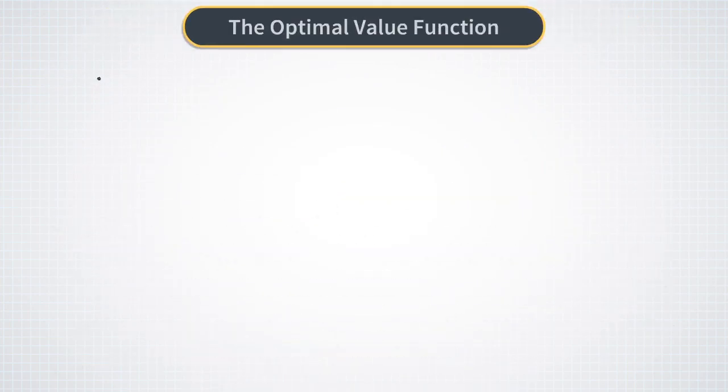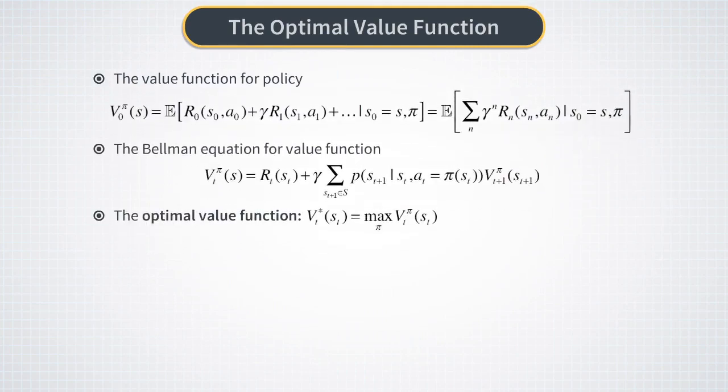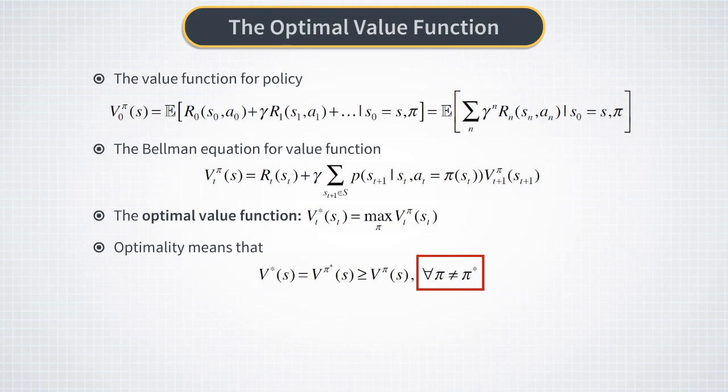Next we introduce an optimal value function called V star. The optimal value function for a state is simply the highest value function for this state among all possible policies. So the optimal value function is obtained for some optimal policy that we will call pi star. The important point here is that an optimal policy pi star is optimal for all states of the system. This means that V star should be larger or equal than V with any other policy and for any state s.